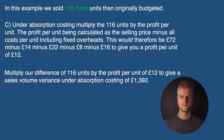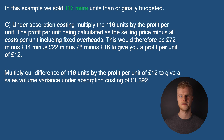The final step is to multiply our difference of 116 units by the profit per unit of £12 to give us a sales volume variance under absorption costing of £1,392.